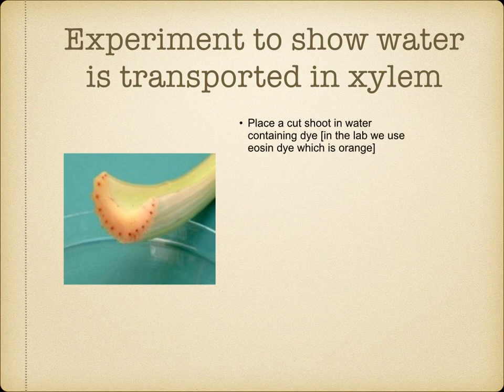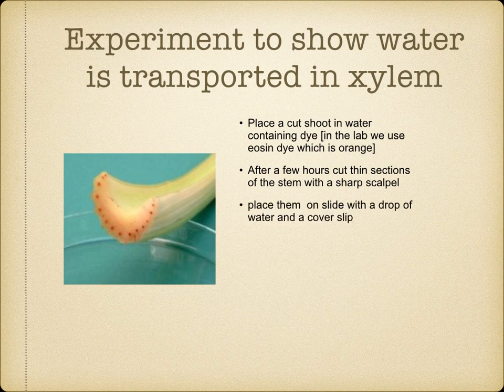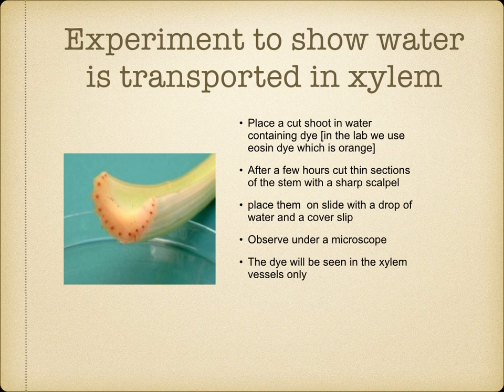How can you identify that water travels through xylem? If you take a shoot — for example, celery — and place it in dye, in the lab we use eosin dye, which is an orange dye. After a few hours, you cut through the stem and you'll notice that the little vascular bundles will stain red, showing where the xylem is located. If you place these cut slides onto a slip and look under the microscope, you'll notice where the xylem is. The dye will be seen in the xylem vessels only.